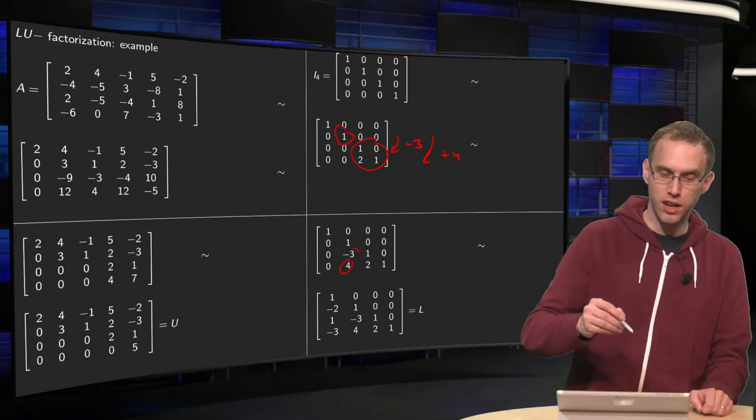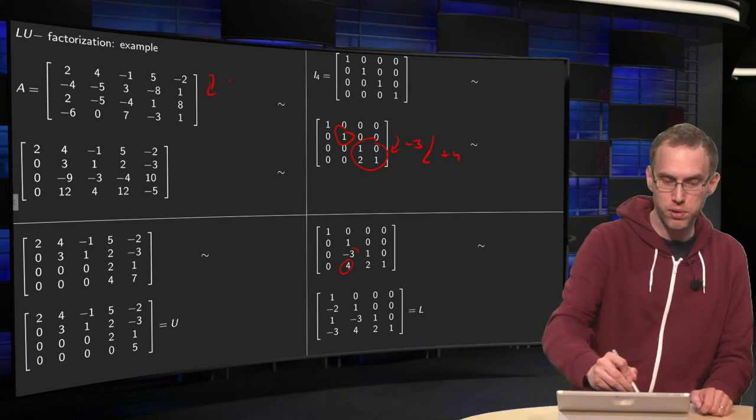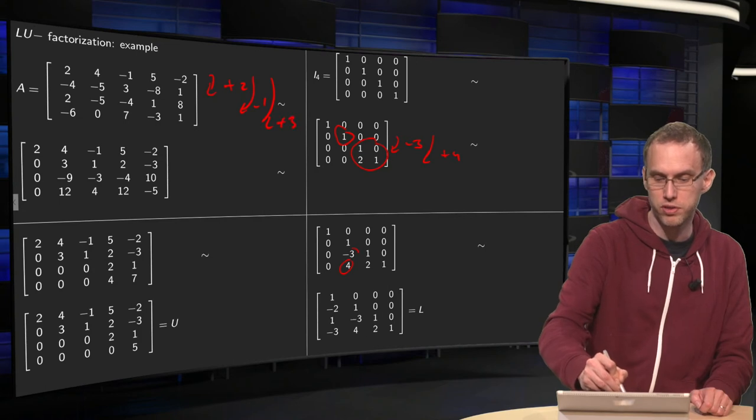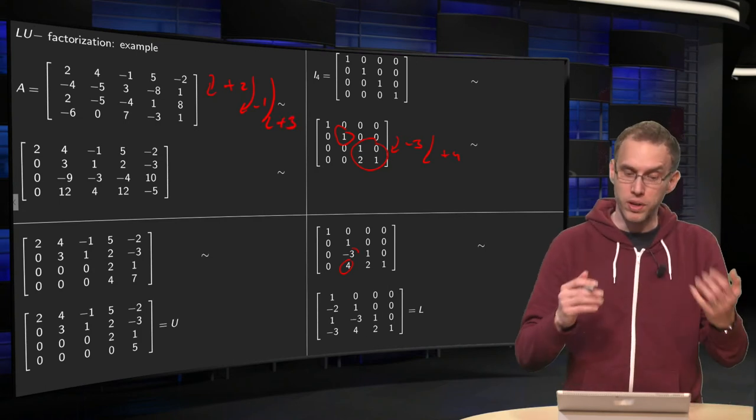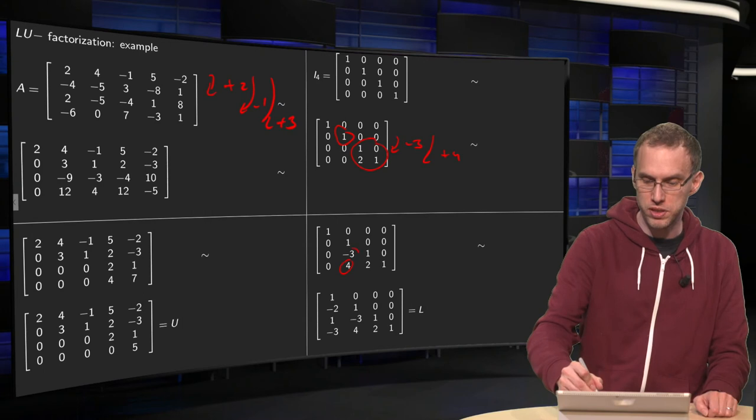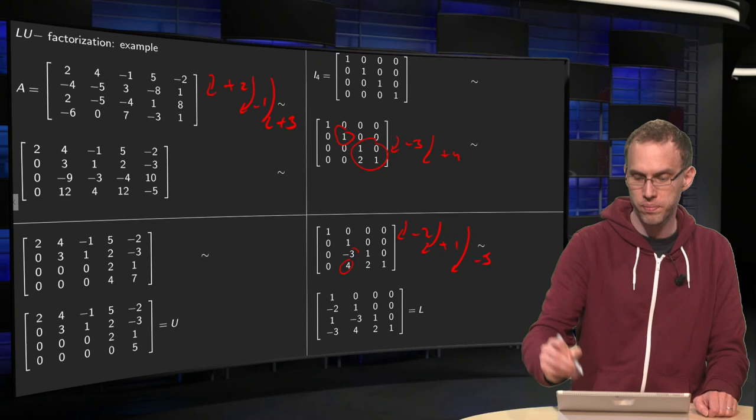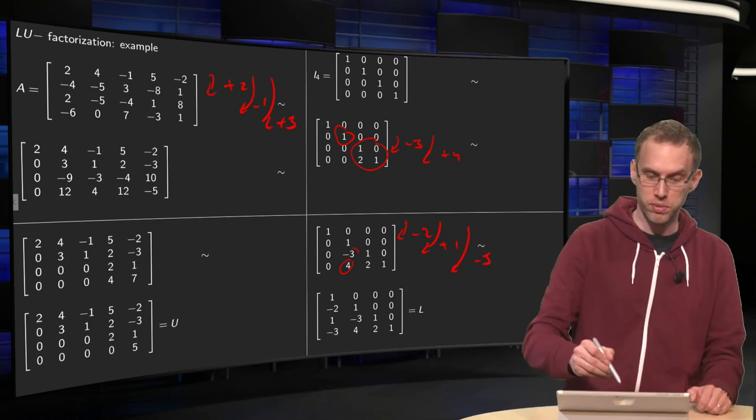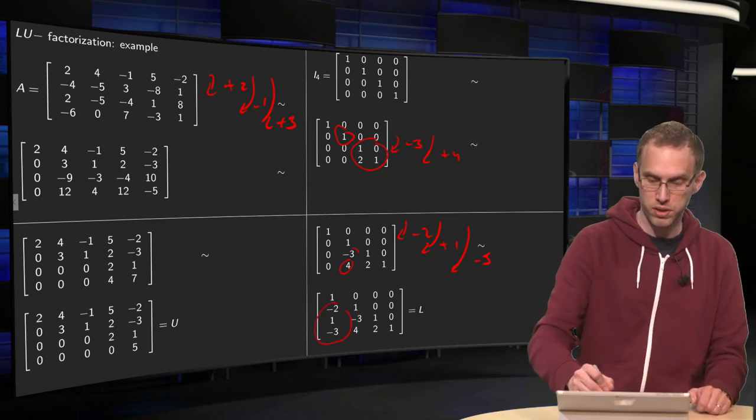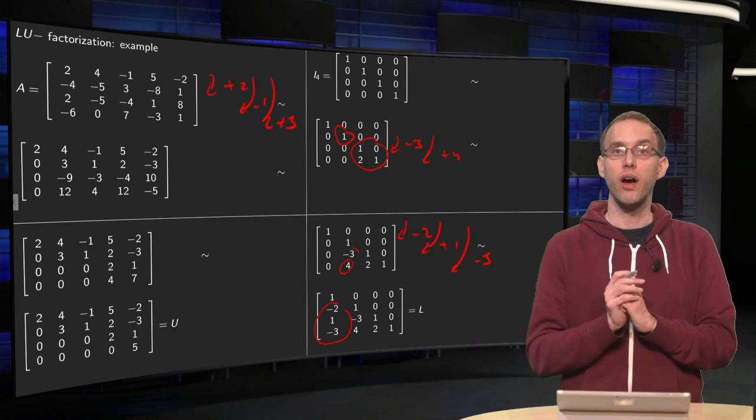And then the last step. What did we do in our first step? We did a +2, -1, and a +3. We do the inverse operations now, so that means a -2, a +1, and a -3. And that yields some numbers in the first column, the numbers over here. And there you have your L.